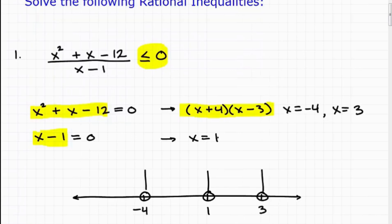So that now gives us our critical values, okay? So our critical values is negative 4, 3, and 1. And now we want to take those and start building out our sign chart.